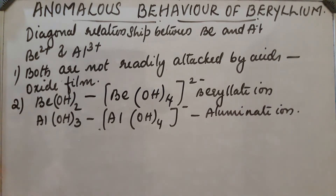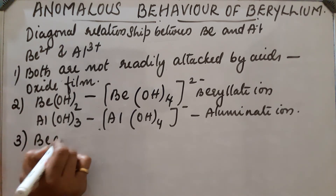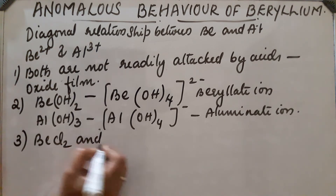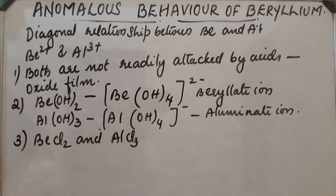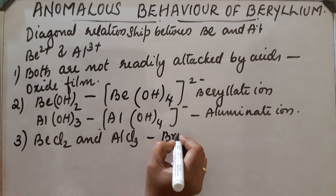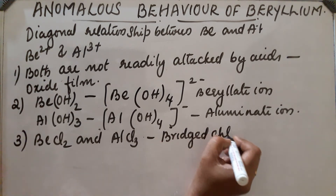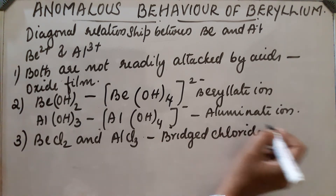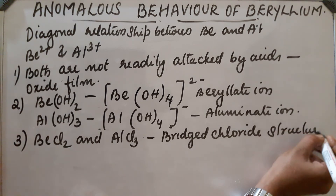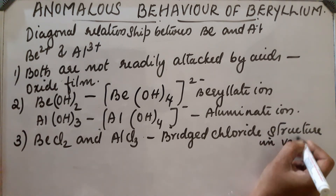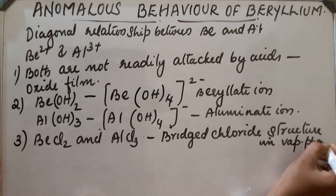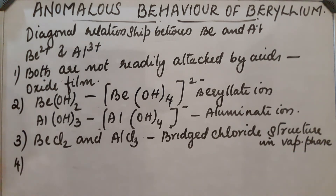Third similarity: beryllium chloride and aluminium chloride both form a bridged chloride structure in their vapour phase.